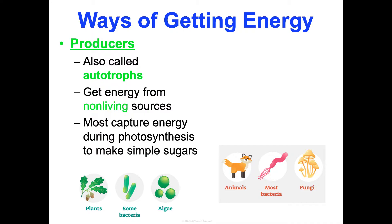Almost all producers capture their energy in the form of sunlight — that's their non-living source — during a process called photosynthesis, and they make simple sugars from it, which we'll learn about in concept four. Examples of producers: plants, some bacteria, algae — these are all producers.